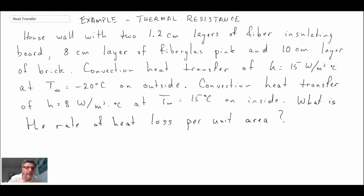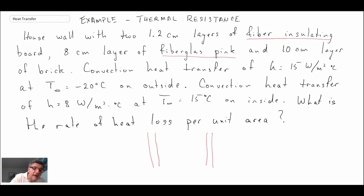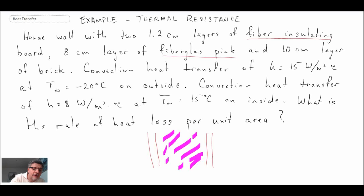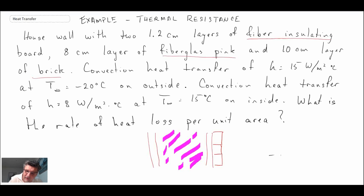Here is our problem statement. We have a house wall that consists of two 1.2 centimeter layers of fiber insulating board, and then an eight centimeter layer of fiberglass pink insulation on the inside between those two walls. We also have a layer of brick on the outside, and convective environments on either side — one at minus 20 degrees C on the outside.